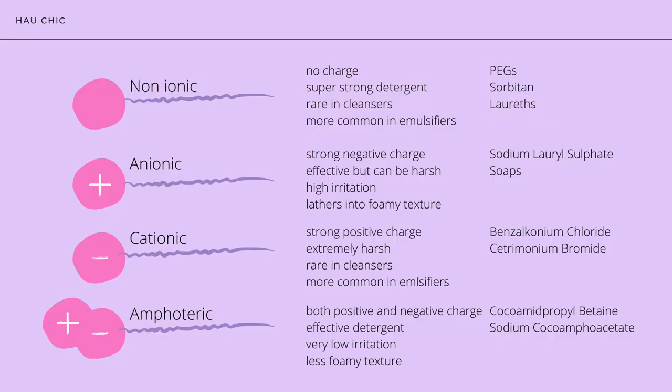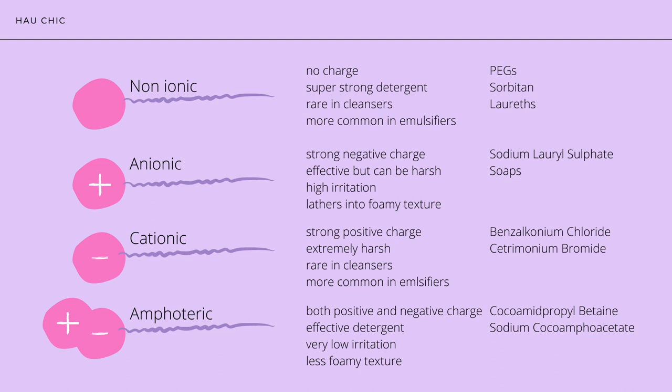There are many different types of surfactants grouped into four parts. First, non-ionic surfactants have no charge and are very strong detergents. They are rare in cleansers but more common as emulsifiers found in cleansing oils — examples include PEGs, sorbitans, and laurils. Then we have anionic surfactants, which have a strong negative charge. They can be very effective but quite stripping for the skin; however, this is what gives most cleansers their foamy texture. An example is sodium lauryl sulfate, or general soaps.